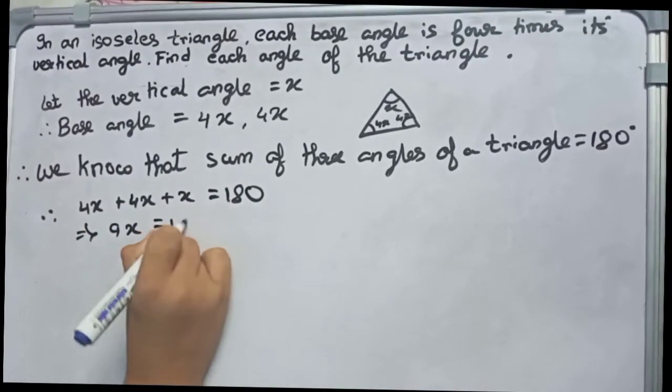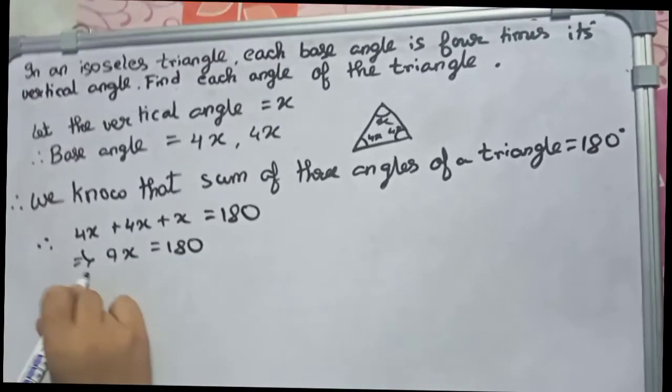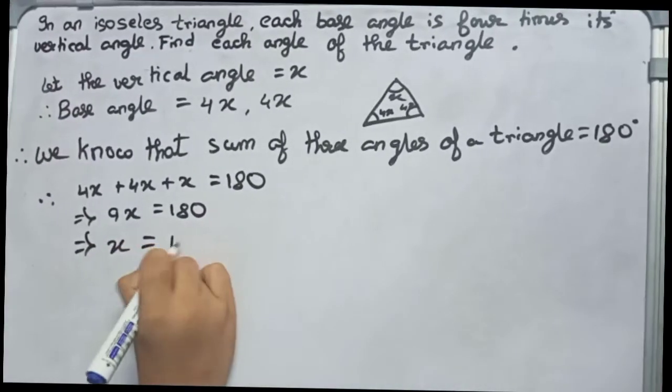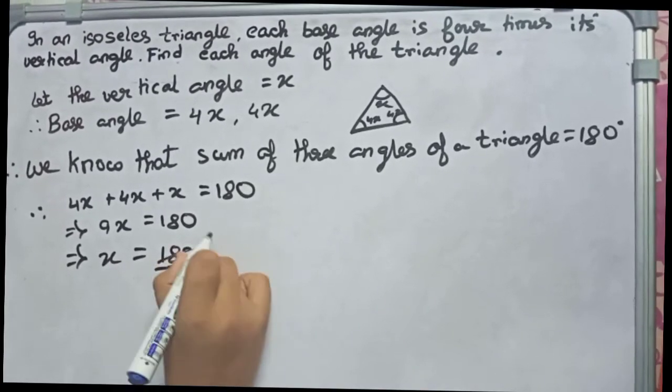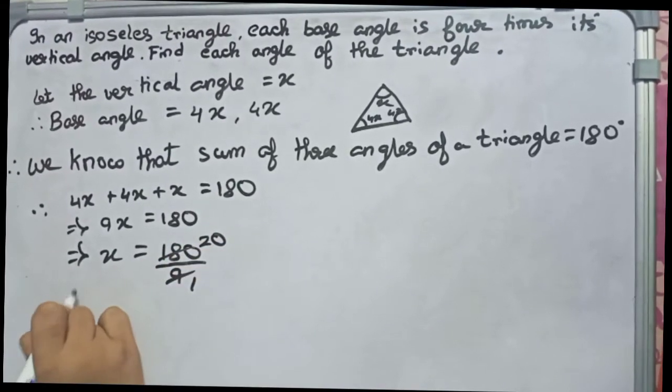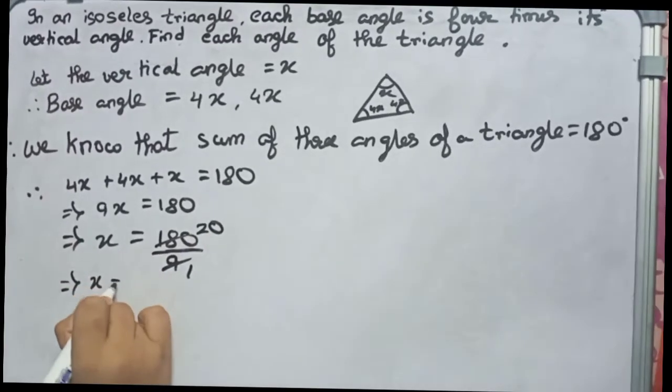Or you can write x equals 180 divided by 9, you can simplify it to 20 over 1, so x equals 20. This is the value of x.